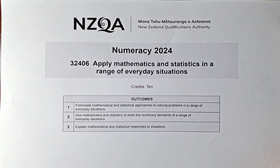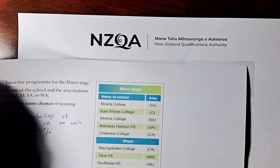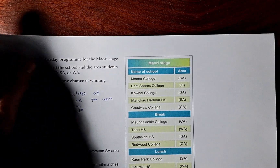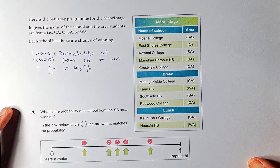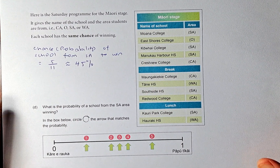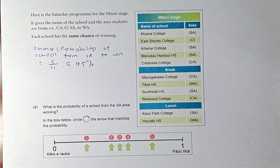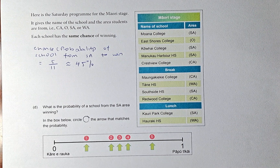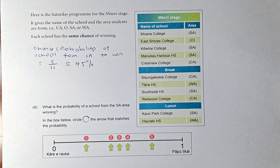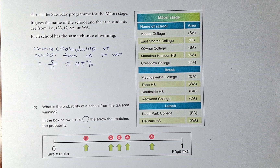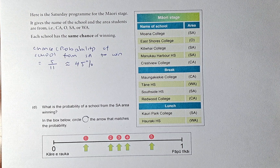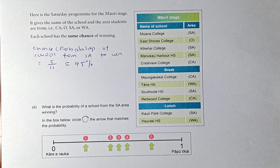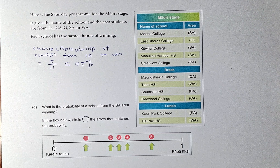Let's do question 4D first. Here is a Saturday program for the Maori stage. It gives the name of the school and the area they are from — CAOSA or WA. Each school has the same chance of winning. What is the probability that the school from the FA area wins? In the box below, circle the arrow that matches the probability.